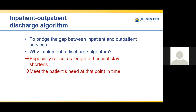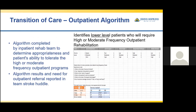To allow for better handoff of patients, we created an inpatient to outpatient discharge algorithm. It was created to assist in determining the dosing of intervention that is appropriate to fit the patient's needs. This algorithm allows the team from acute care units to communicate to outpatient prior to time of discharge to allow for better planning and access to outpatient services. This algorithm is designed to identify lower level patients that will require and benefit from high or moderate frequency of visits in outpatient. The inpatient rehab team discussed the appropriateness of patients during their team's stroke huddle.